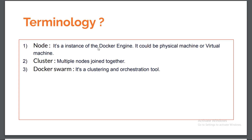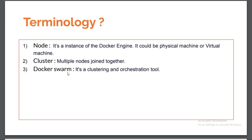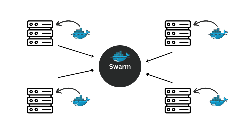The next terminology is 'cluster.' A cluster is simply a collection of multiple nodes. A node is a machine with Docker engine installed, and when we connect multiple nodes together we create a cluster. Docker Swarm is a clustering and orchestration tool — it is the tool that allows us to join multiple Docker nodes together, create a cluster, and manage that cluster.